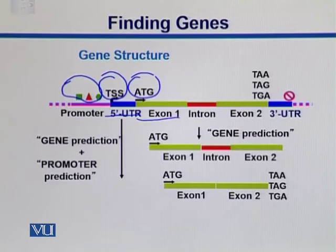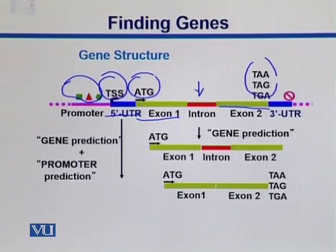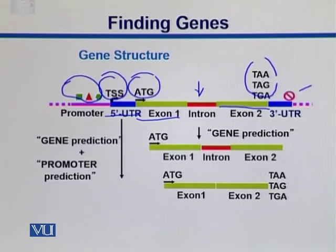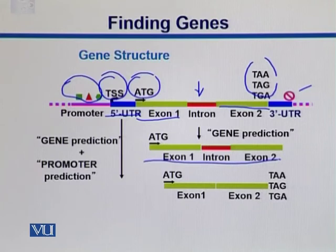Then we have exon 1. In eukaryotes, the ATG start point is in exon 1. In between, there is an intron, and then we have exon 2. Then we have the stop codons — TAA, TAG, TGA — which is how translation later stops. As far as transcription is concerned, it stops further downstream. Messenger RNA will be formed from these regions. After we get the pre-messenger RNA, we get the final messenger RNA where introns are chopped out, and exon 1 and exon 2 are joined together, with this start codon and these stop codons.